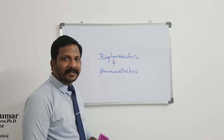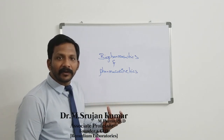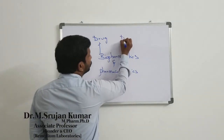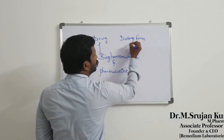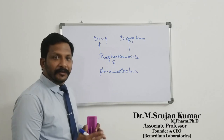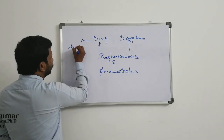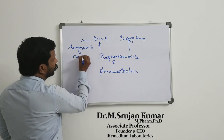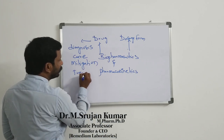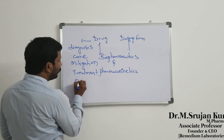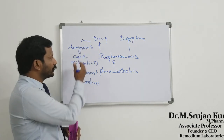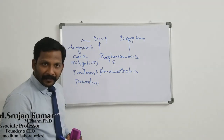The first term is drug, and the other one is dosage form. What do you mean by the term drug? Drug is a substance intended for use in diagnosis, cure, mitigation, treatment, and prevention of disease.